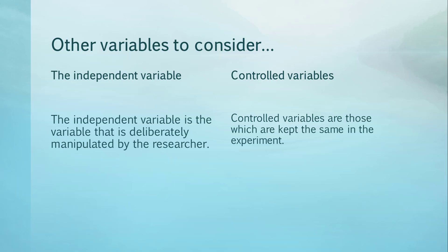Other variables to consider. The independent variable and controlled variables. The independent variable is the variable that is deliberately manipulated by the researcher. Controlled variables are those which are kept the same in the experiment.